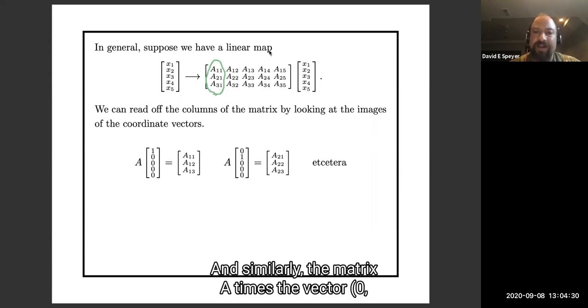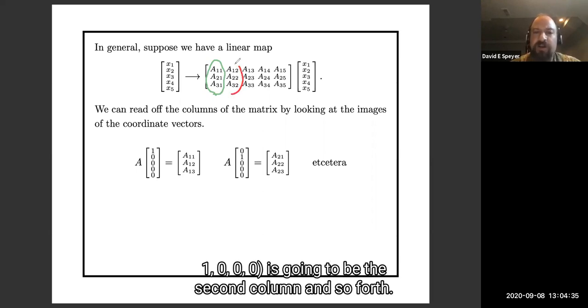Similarly, the matrix A times the vector 0, 1, 0, 0, 0 is going to be the second column, and so forth.